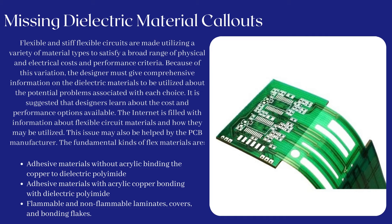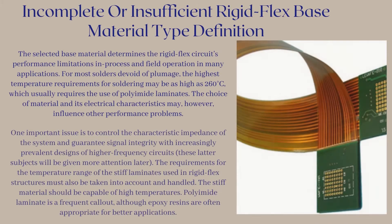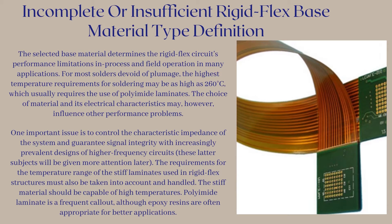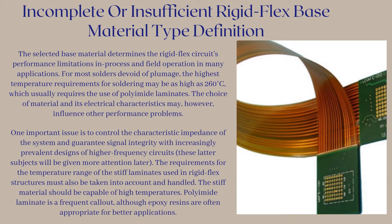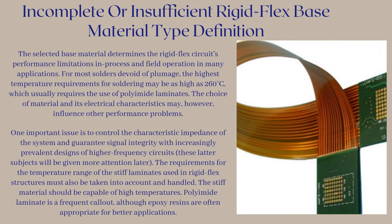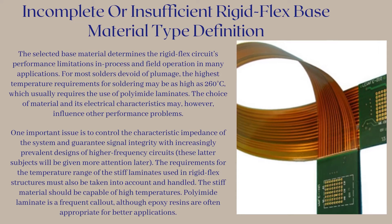The fundamental kinds of flex materials are: adhesive materials without acrylic binding the copper to dielectric polyamide, adhesive materials with acrylic copper bonding with dielectric polyamide, flammable and non-flammable laminates, covers, and bonding flakes. In complete or insufficient rigid-flex base material type definition, the selected base material determines the rigid-flex circuit's performance limitations in process and field operation in many applications.